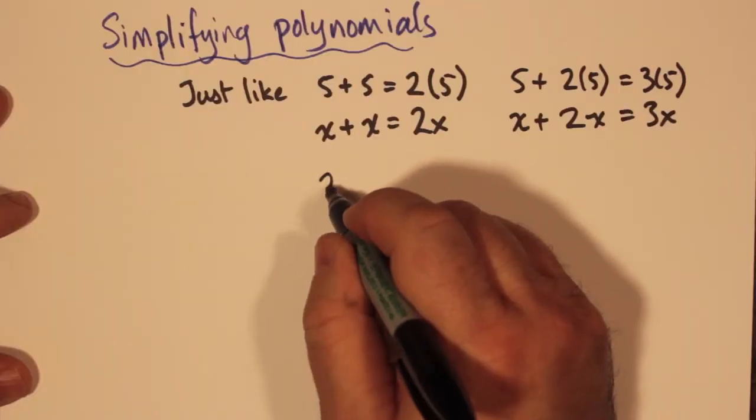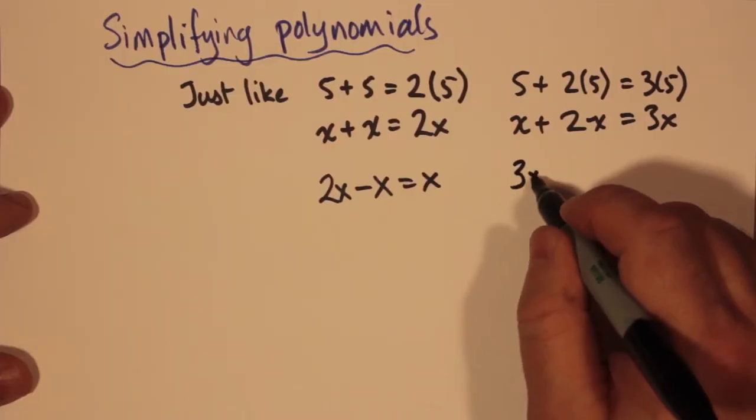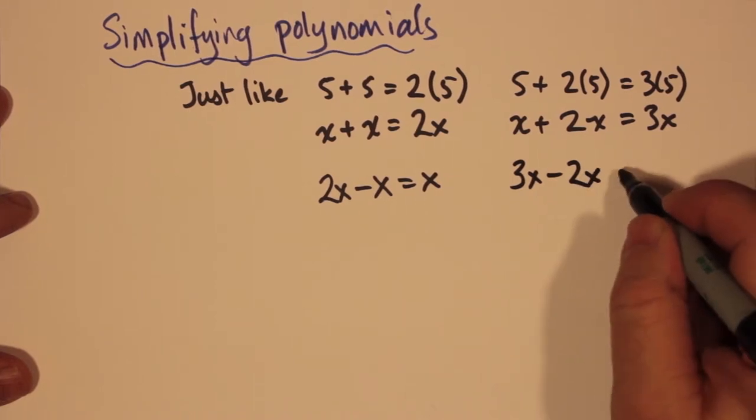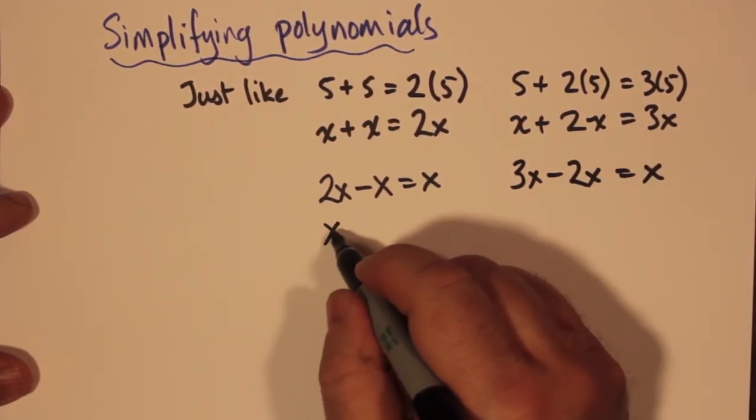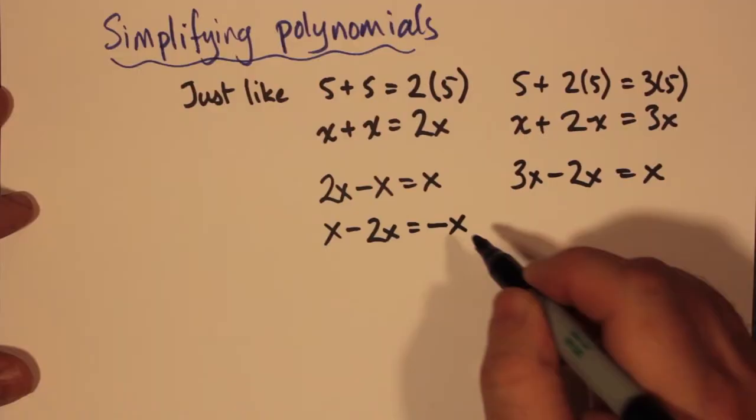Subtraction is another way of simplifying, as long as the terms are what we say like terms, meaning that both terms contain the same variable or both terms are constant. We can have 2x - x = x, we can have 3x - 2x = x, or x - 2x.